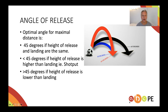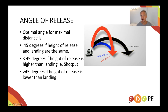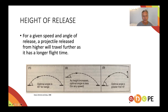An example of where the height of release is lower than the landing point could be in golf — maybe hitting a wedge shot out of a bunker — and in that case you're going to need a higher than 45 degree angle. There's a picture on the next slide that explains that really well.